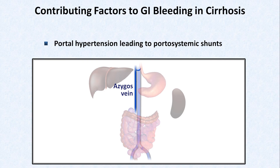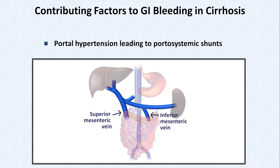This small vein feeding it is one of the esophageal veins. Draining the intestines, there is the superior and inferior mesenteric veins. Here is the splenic vein. This little one here is the left gastric vein, which drains part of the stomach and the distal end of the esophagus. Those all eventually flow into the portal vein, which then divides into the right and left portal vein as it enters the liver.